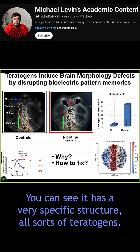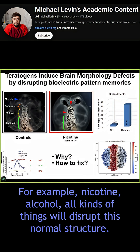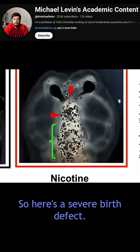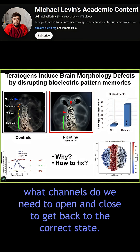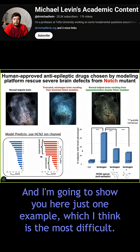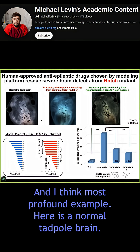All sorts of teratogens — for example, nicotine, alcohol, all kinds of things — will disrupt this normal structure. So here's a severe birth defect. What we try to do is to make a computational model of this process and be able to ask what channels do we need to open and close to get back to the correct state. And I'm going to show you here just one example, which I think is the most difficult and most profound example.